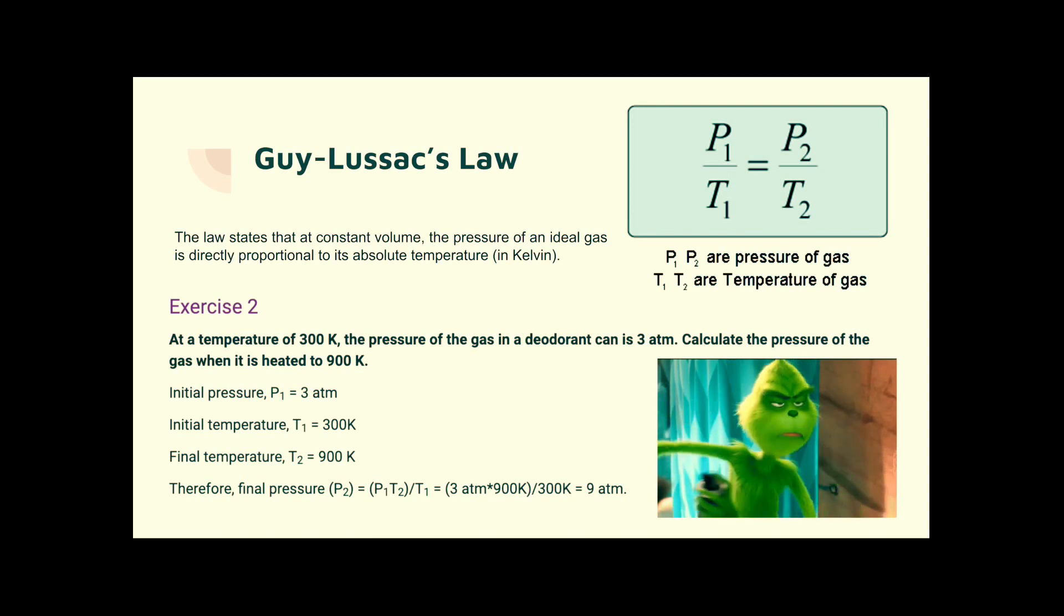Guy-Lussac. Guy-Lussac. Who knows how to pronounce that? Probably not me. P1 over T1 is P2 over T2. So at constant volume, the pressure of an ideal gas, we'll talk about an ideal gas at the end, is directly proportional to its absolute temperature. So in this case, we've got a temperature of 300k. It's already in Kelvin, which is great. The pressure is three atmospheres. So we've got T1 and we've got P1. The pressure, what's the new pressure? So we want to solve for P2, when T2 is 900k. So P2, the new pressure, is your known, your initial, times your new, divided by your initial, which gives you nine atmospheres. And they're very happy. Is that the Grinch spraying deodorant? I'm not sure.